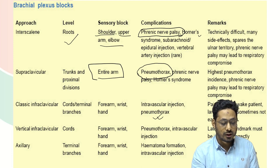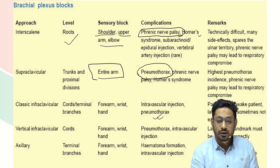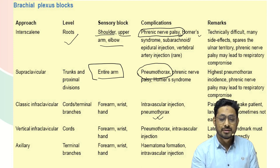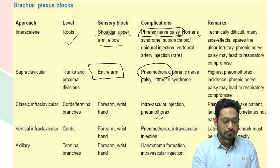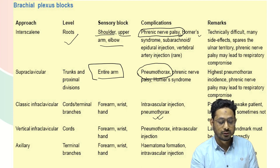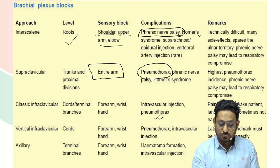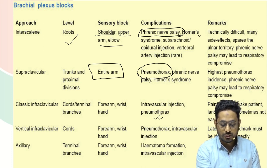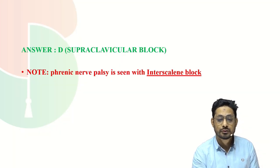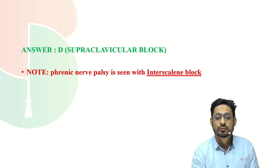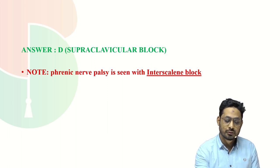Axillary block is given at the level of terminal branches, blocking the axillary nerve, radial nerve, and ulnar nerve. The most common complication here is hematoma formation — this is what we should remember. So the answer for the above question is supraclavicular block, which has the highest incidence of pneumothorax. Phrenic nerve palsy is seen with interscalene block.